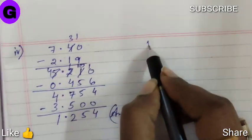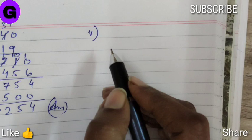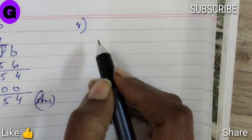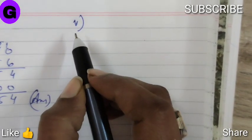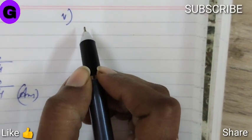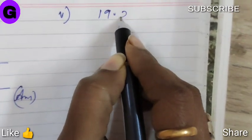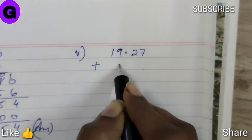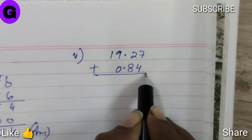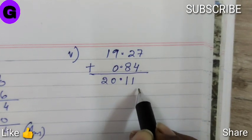Now sum number 5. Here we have both the signs negative as well as positive. So first we are going to group the positive and the negative numbers separately. So nothing written, no sign before a number means that number is positive. So first according to the Bodmas rule we will do the addition. So the positive numbers are 19.27 plus 0.84. We got the answer 20.11.